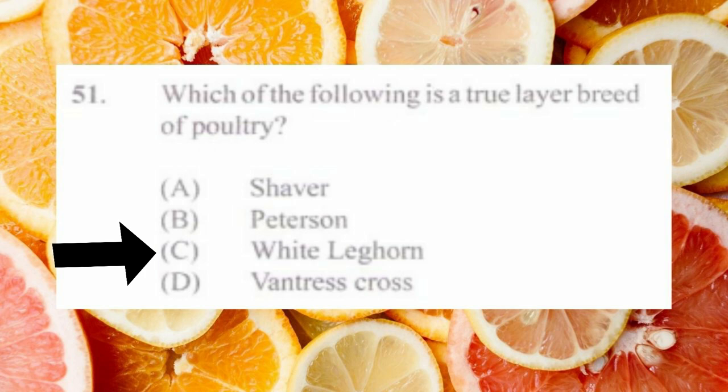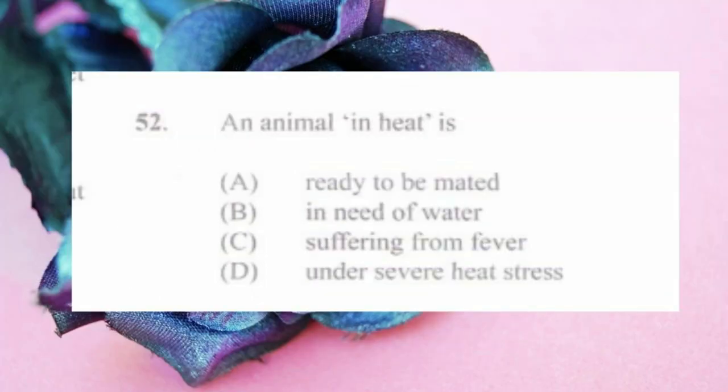Question number fifty-one: which of the following is a true layer breed of poultry? a) Shaver, b) Peterson, c) White Leghorn, d) Ventress cross. The answer is c) White Leghorn.